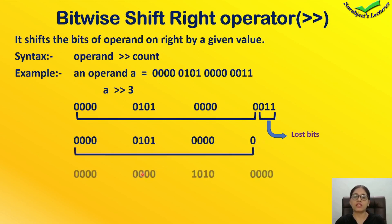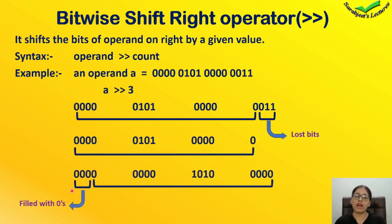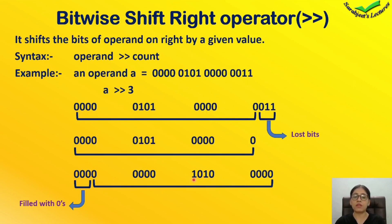We will remove three bits from the left side and add three bits from the left side, filling in the binary number in the set.